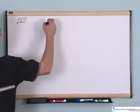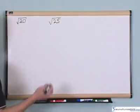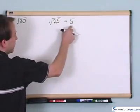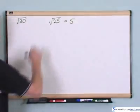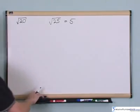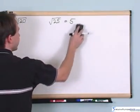Let's say if you had the square root of 25, just for review, that's going to be equal to 5 because what you're trying to do is find 5 times 5 is 25. That's why the answer is 5.